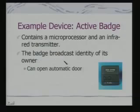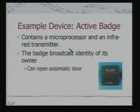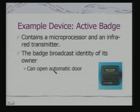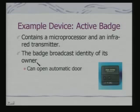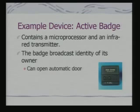A good example device built long back is the active badge — nothing but an embedded system. It contains a microprocessor and an infrared transmitter. If you think about RFIDs, this is basically something like an active RFID. The badge broadcasts the identity of its owner, so you carry that badge and it can open automatic doors or permit you to log into a system. It makes the environment sensitive to you — in that sense, it provides context awareness.